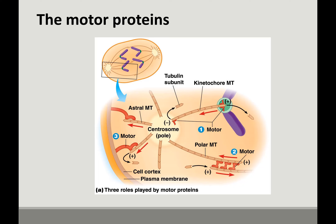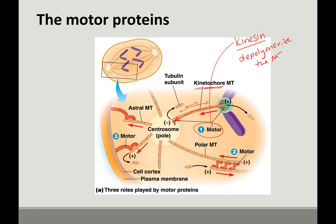The motor proteins involved — and we need something to do this pushing and pulling — come in three types. First are kinesin motor proteins, which actually help degrade, or depolymerize, the kinetochore microtubule. So you end up shortening this microtubule, which pulls the chromosome toward the centrosome or pole. The kinesins depolymerize the microtubules — that's how they pull: by making it shorter and shorter.